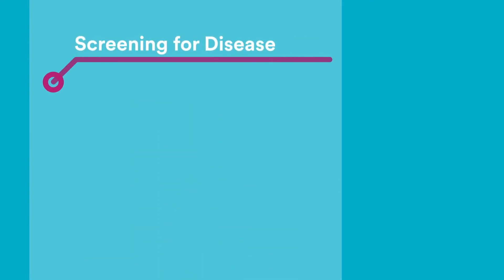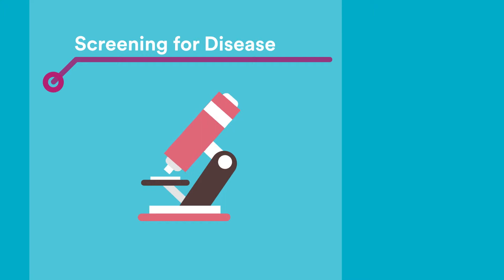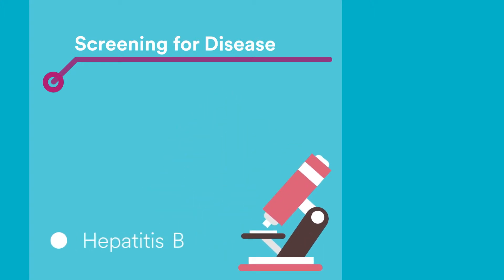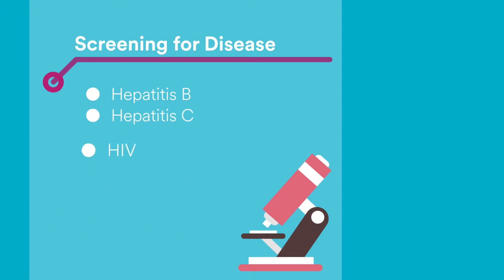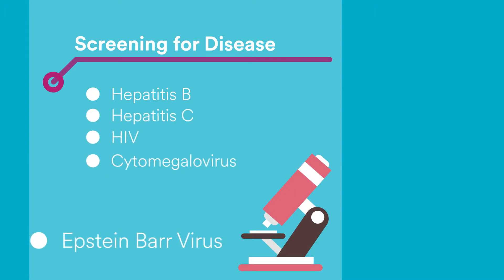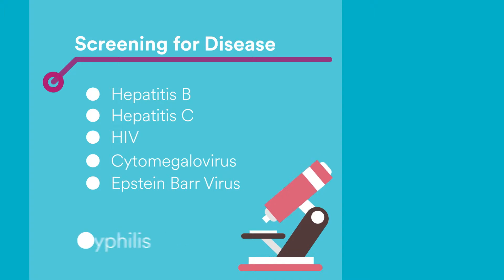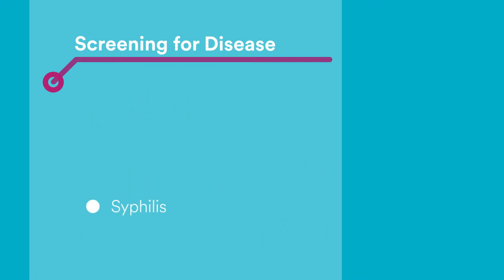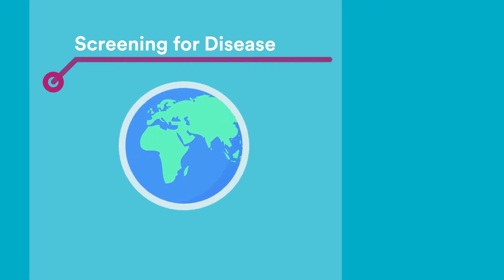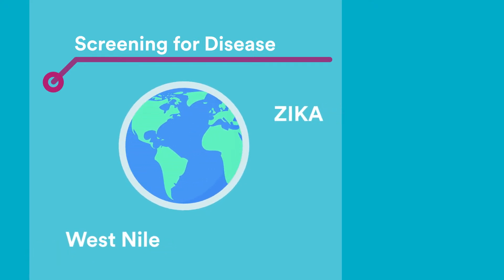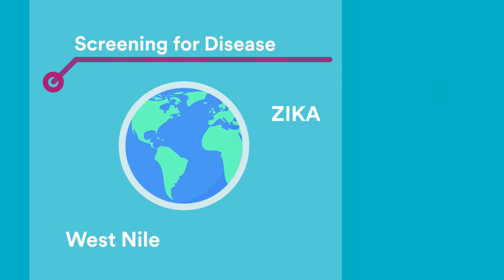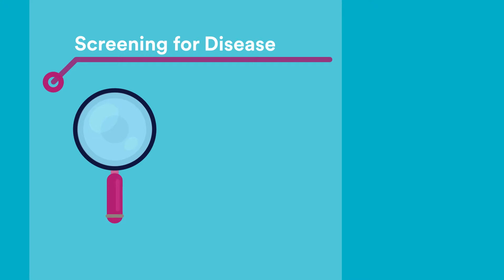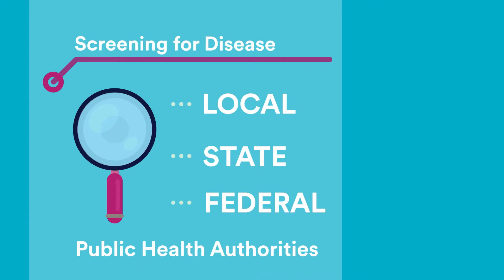Screening for transmissible disease: you will be screened for certain transmissible diseases which include Hepatitis B, Hepatitis C, HIV, cytomegalovirus, Epstein-Barr virus, and syphilis. If you live in an area known to have a transmissible disease specific to that area, like West Nile virus or Zika virus, additional screening may be completed. In some cases, certain diseases detected by the transplant hospital may require disclosure to local, state, and federal public health authorities.